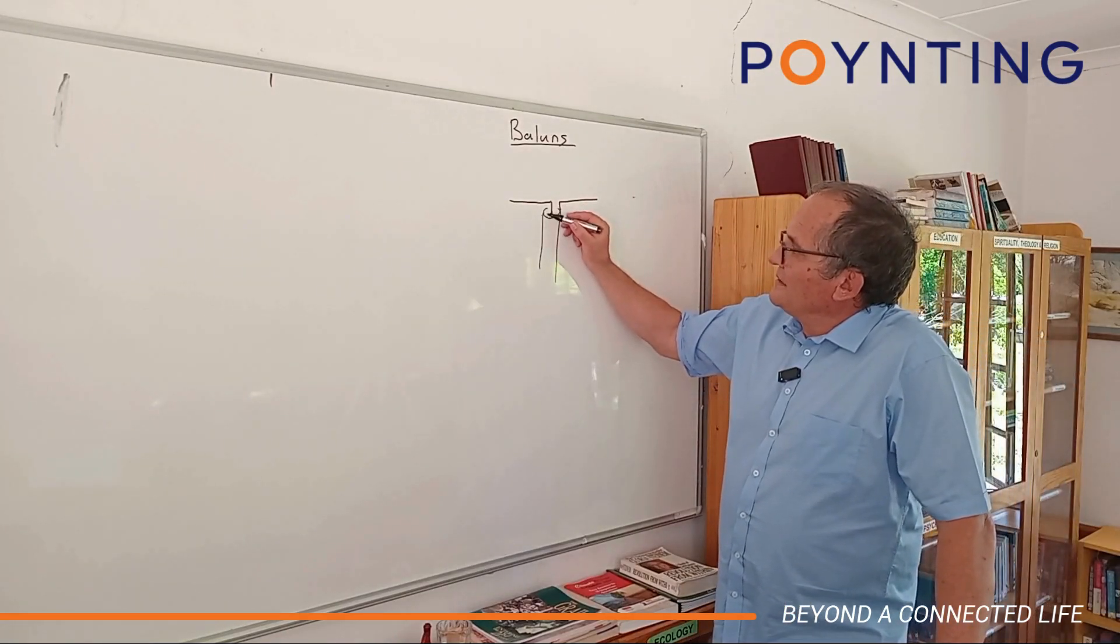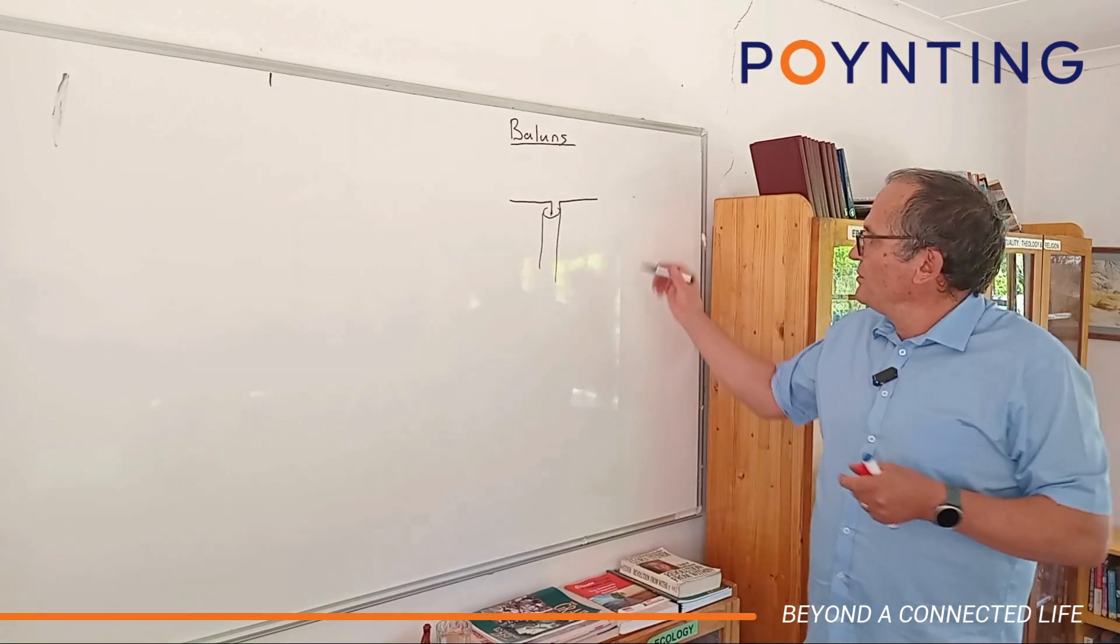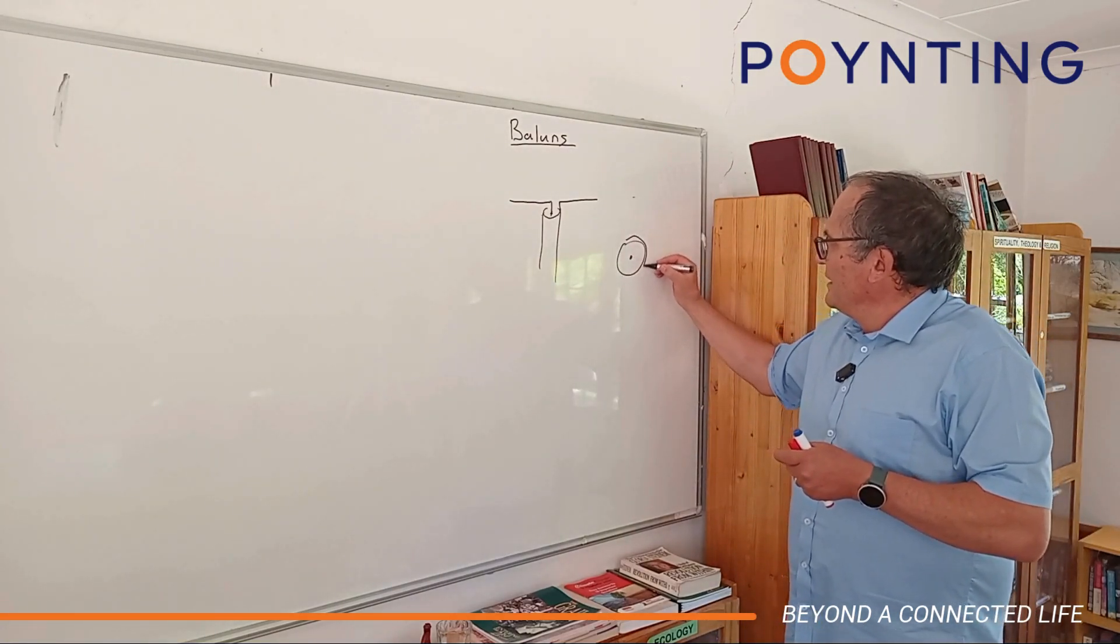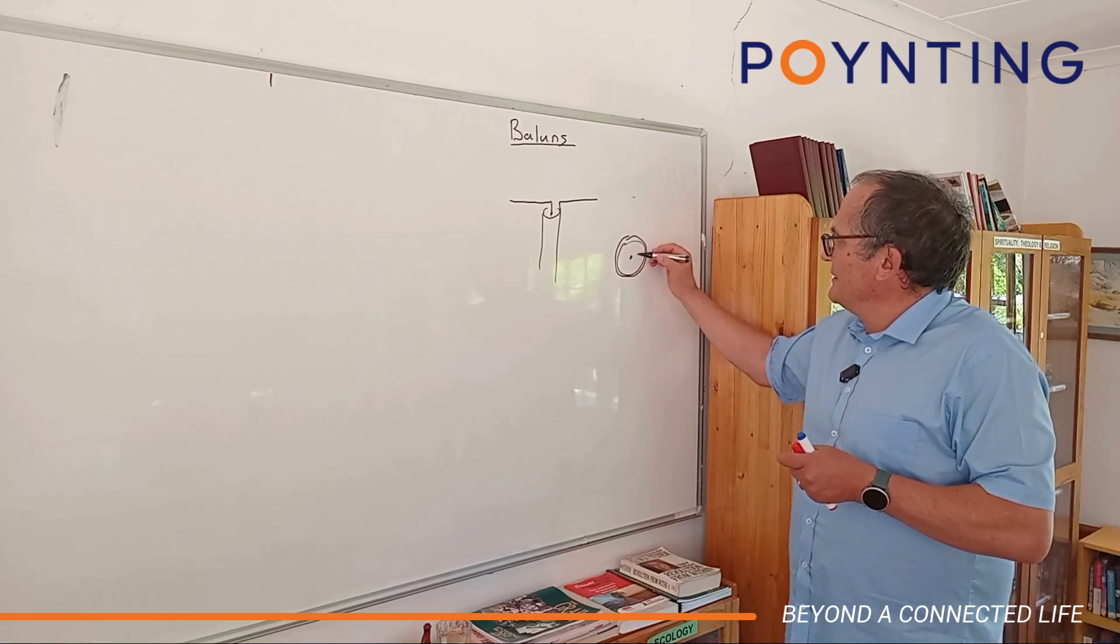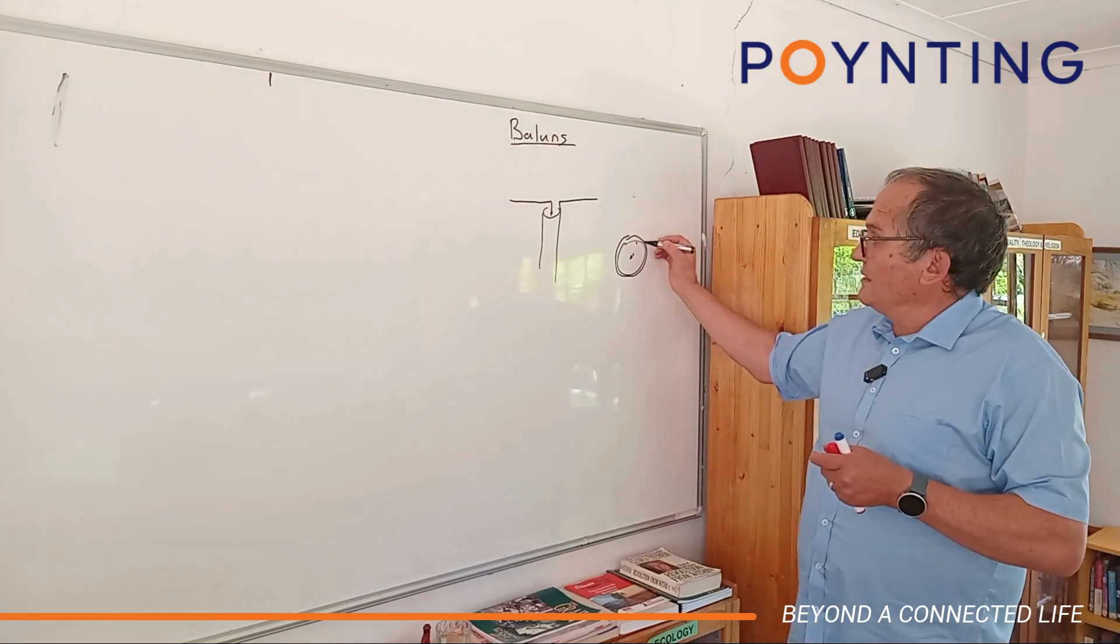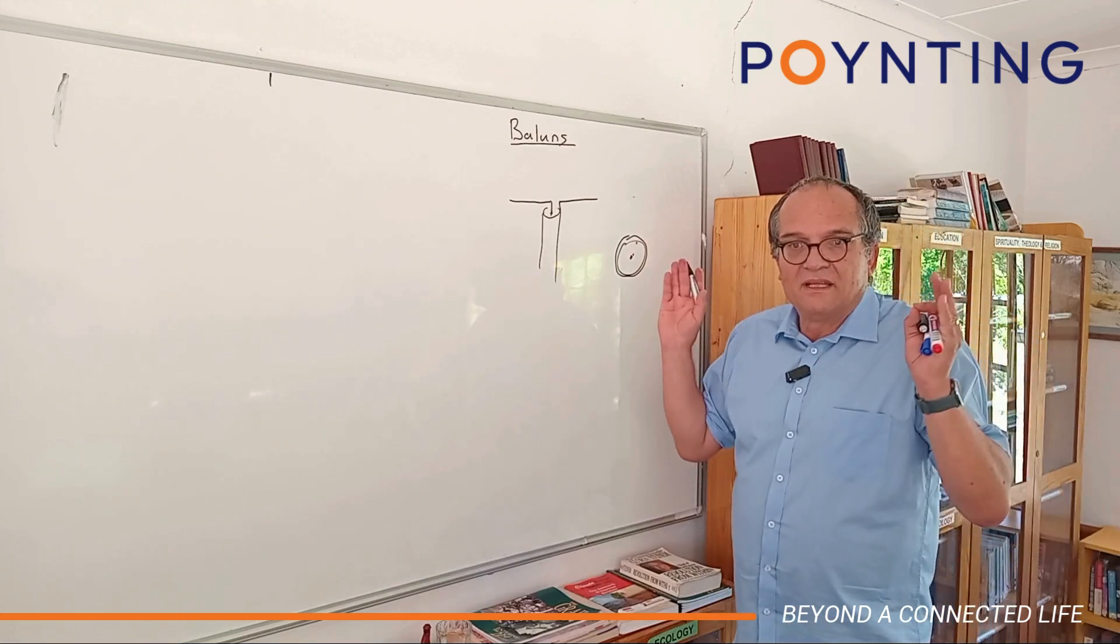The reason why this is unbalanced is the current there is always equal to the current on the inside. Because on the coax there's the middle part - you can consider the wall to be a certain thickness - and this current going in is always equal to that current running on the inside that's going out. That's fully shielded because they cancel - you don't see any radiation from those currents.